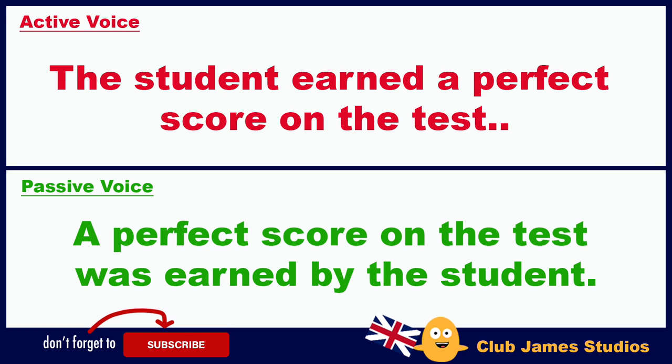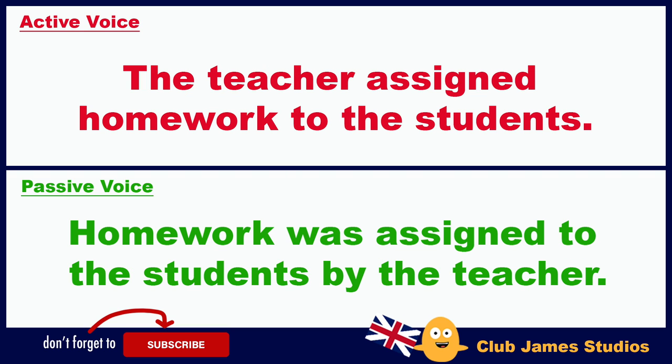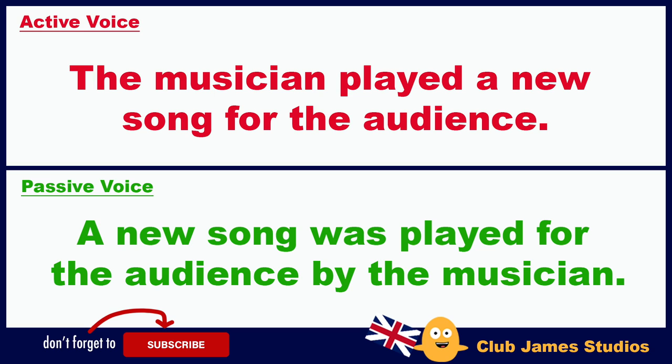The student earned a perfect score on the test. / A perfect score on the test was earned by the student. The teacher assigned homework to the students. / Homework was assigned to the students by the teacher. The musician played a new song for the audience. / A new song was played for the audience by the musician.